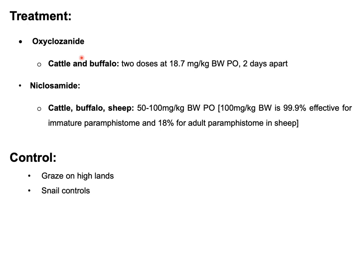Treatment of animals suffering from Amphistomosis or Paramphystomosis: different drugs are available, but the most common are oxyclozanide and niclosamide. Oxyclozanide is popularly used for cattle and buffalo at a dose of 18 milligrams per kilogram body weight per oral, given as two doses two days apart. Niclosamide is used in cattle, buffalo, and sheep at a dose of 50 to 100 milligrams per kilogram body weight per oral as a single dose. According to literature, if the dose increases to 100 milligrams per kilogram body weight, it is 99% effective for killing immature Paramphystomes and around 18% effective for killing adult Paramphystomes in sheep.